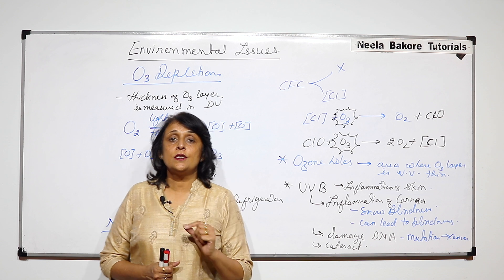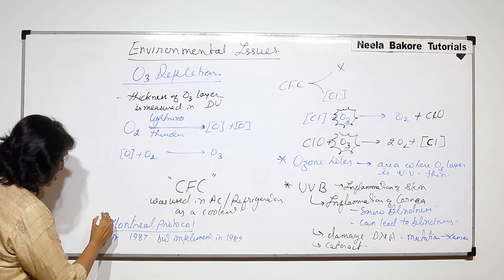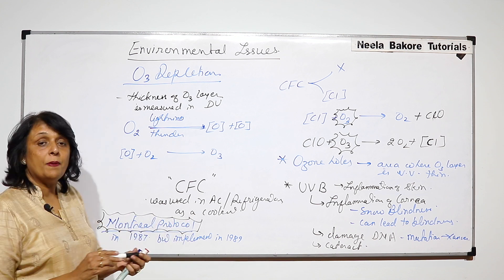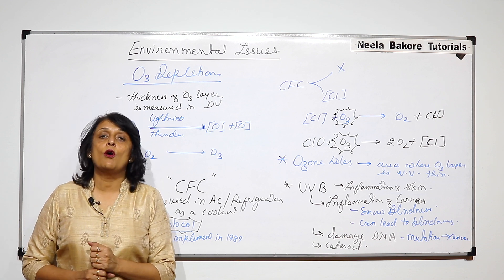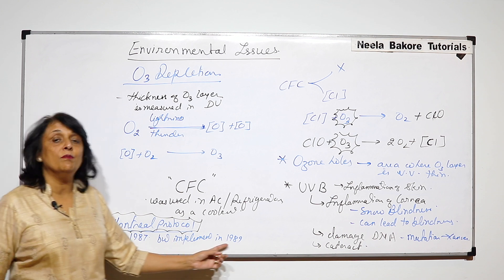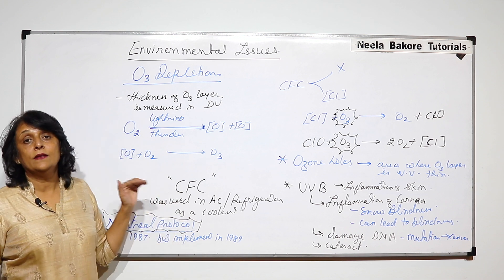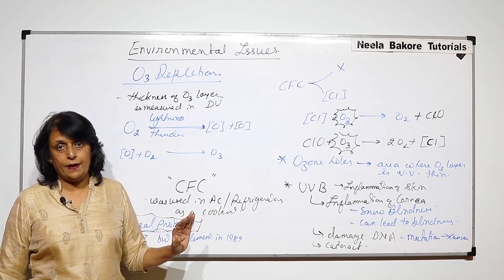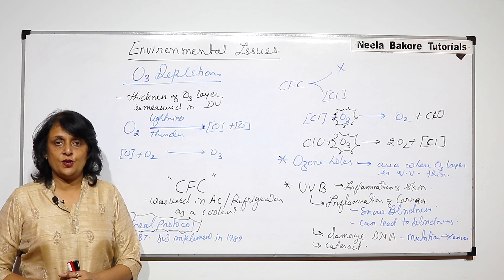So this is about ozone depletion. And this is the most important thing that we have to remember. Montreal is a place in Canada where this treaty was signed. And that is why it is called Montreal Protocol. It was signed in 87 but was implemented in 89. So this is a very important thing. And this was to control depletion of ozone layer. So this completes our ozone layer depletion part.